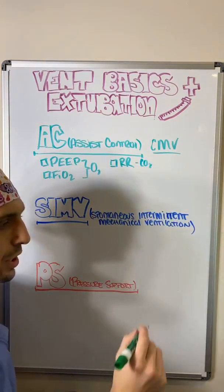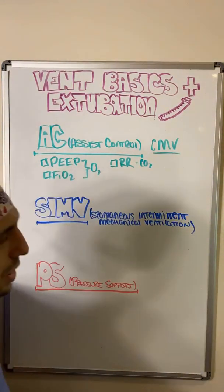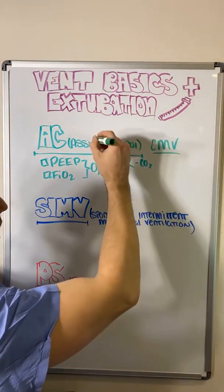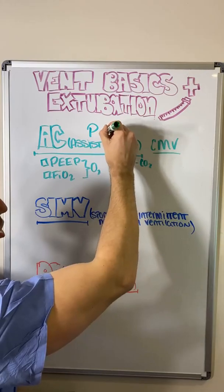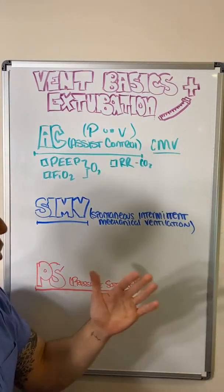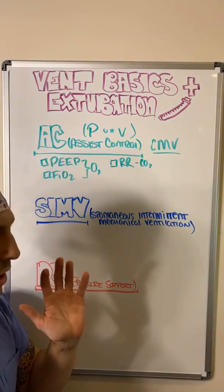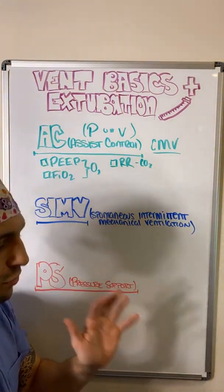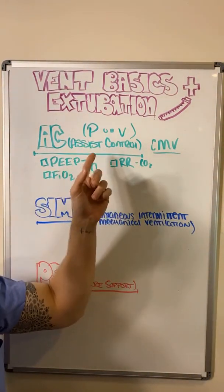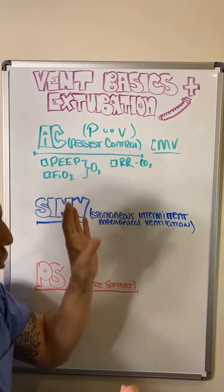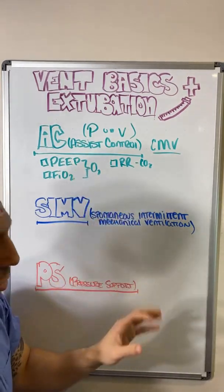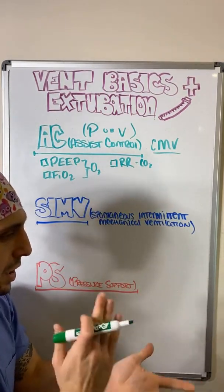Remember, ventilation is the removal of CO2 and oxygenation is the obtaining of oxygen. Depending on the mode, assist control can be either pressure or volume. Most people in the ICU are going to be on volume control because the ARDSnet trials for low tidal volume ventilation — you can't guarantee a tidal volume with pressure control since some breaths will be bigger or smaller, but with volume control you're guaranteed that volume every time.